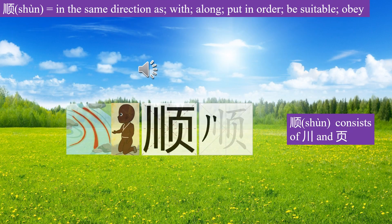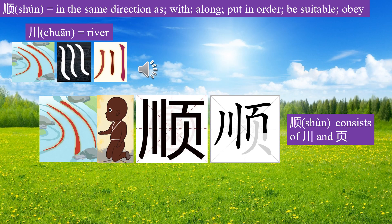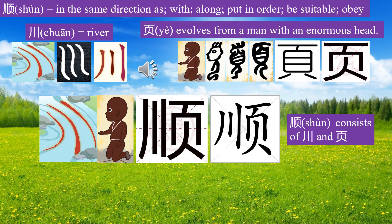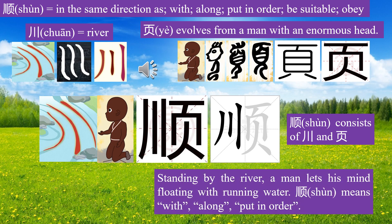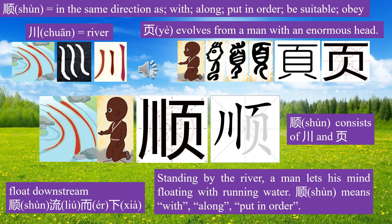Character Shun consists of Chuan and Ye. Chuan means river; Ye evolves from a man with a big head. Standing by the river, a man lets his mind float with the running water. Shun means with, along, put in order. Float downstream — chuan liu er xia.